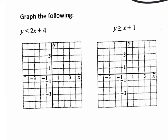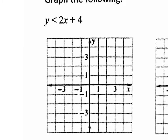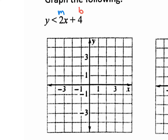Now we're jumping to the next two questions, reviewing stuff from semester 1 — this is very important because we need it for the next section. Do you remember how to graph with y = mx + b? What's the m value here? 2. What's the b value? 4. We always start with the y-intercept, which is positive 4. Go to the y-axis and put a dot at 4.